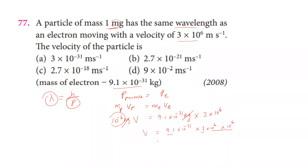Computing the numerator: 9.1 times 3 gives approximately 2.7, and combining the powers of 10 (minus 31 plus 6 minus minus 6) gives 10 to the power minus 19. The final answer is approximately 2.7 times 10 to the power minus 19 meters.